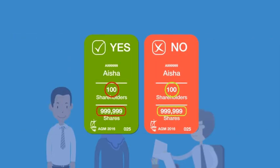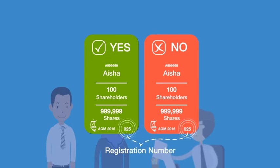These cards contain information of the attendee, indicating the number of shares and shareholders they represent. Both Ali and Aisha will verify and confirm their information at the counter before entering the meeting hall. All cards are given a registration number for vote verification purposes.